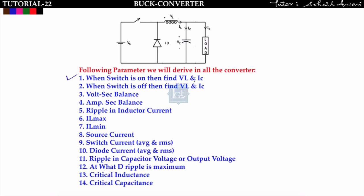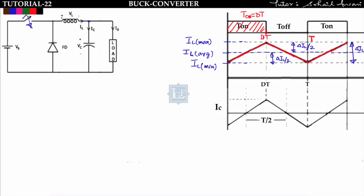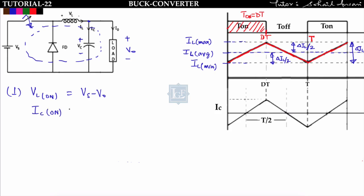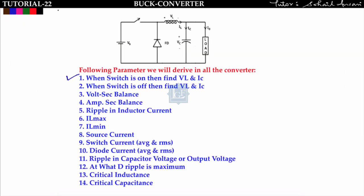For parameter 1 — when switch is ON — we draw the equivalent circuit where the freewheeling diode is open-circuited. Applying KVL in the loop gives VL_on = Vs − V0. Applying KCL gives the capacitor current during ON: IC_on = IL − I0.